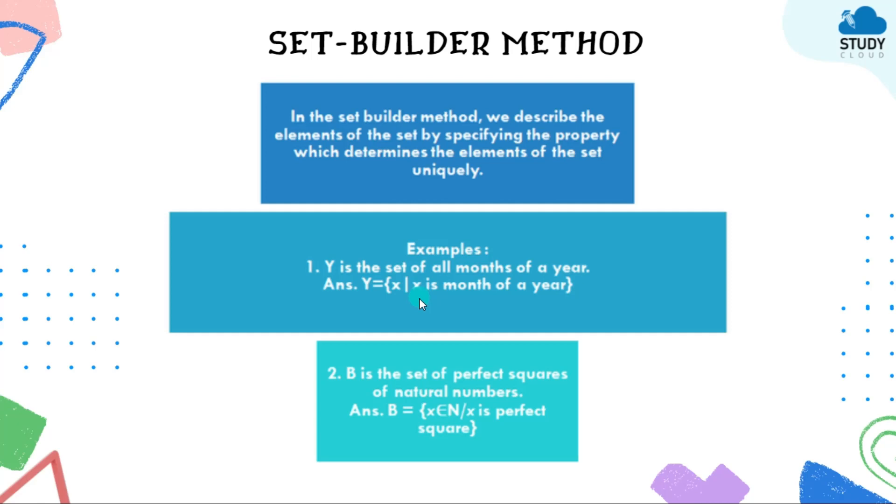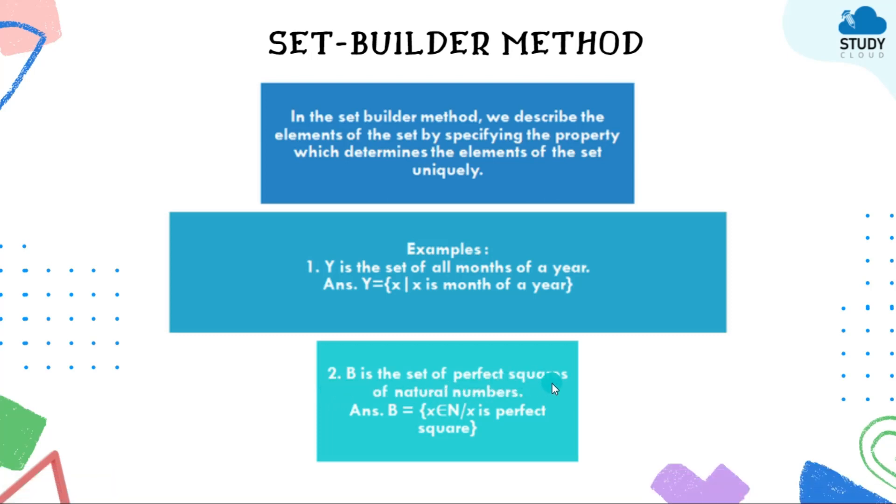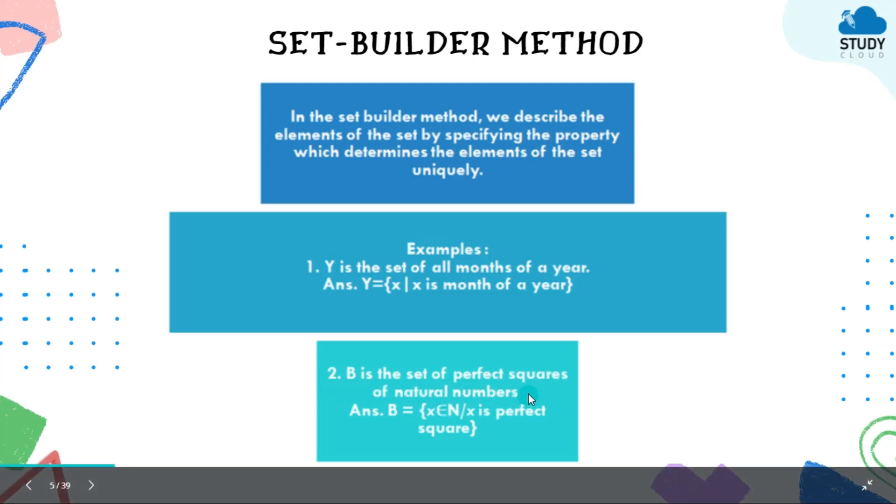B part, second: B is a set of perfect squares of natural numbers. So you have to write it like this: B is a set of all X such that X is an element of natural numbers. Remember, X is an element of natural numbers and X is a perfect square.